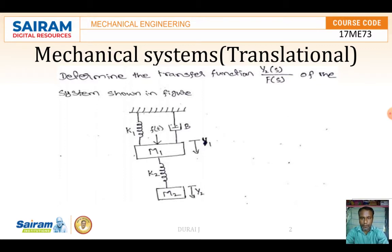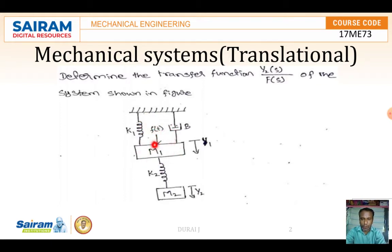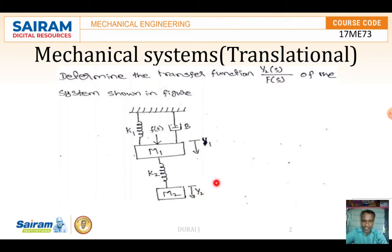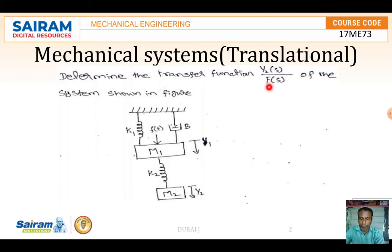The input is F(t), the force acting on M1. Once the force acts on M1, both M1 and M2 will be displaced from their original positions. The output we are checking is Y2 displacement. So they are asking for Y2(s)/F(s), where Y2(s) is the output and F(s) is the input.